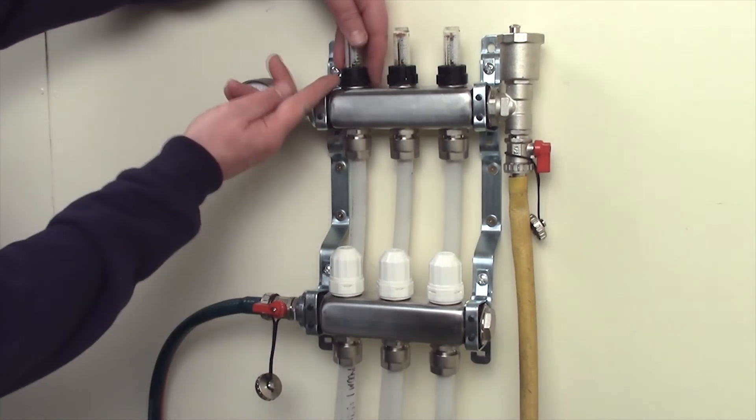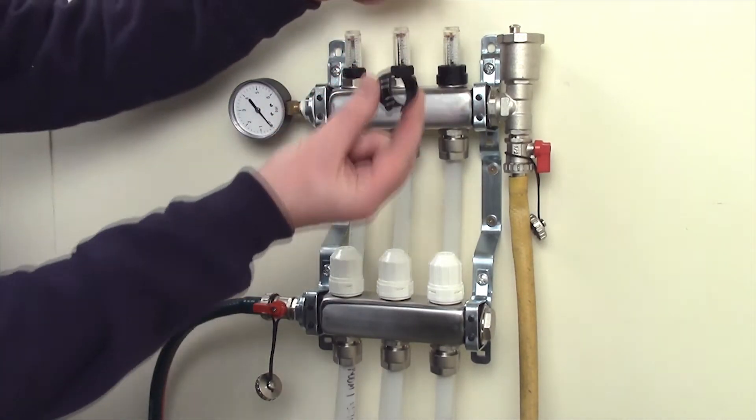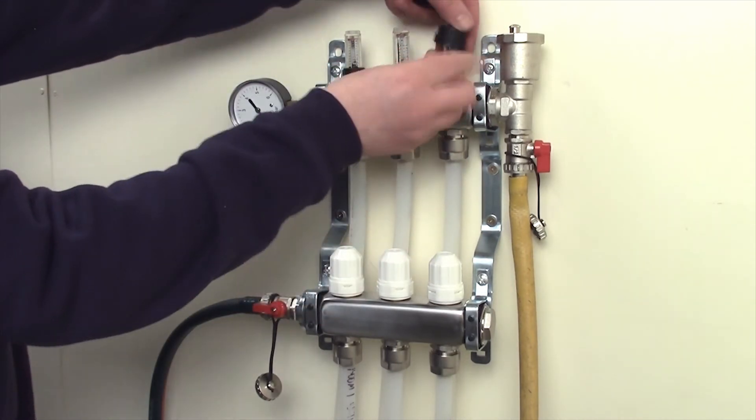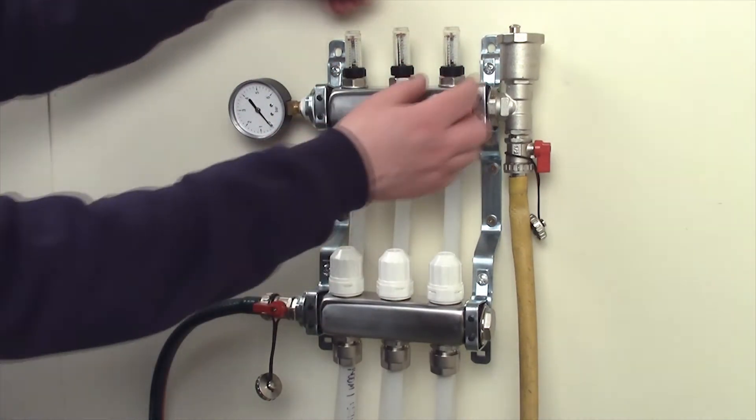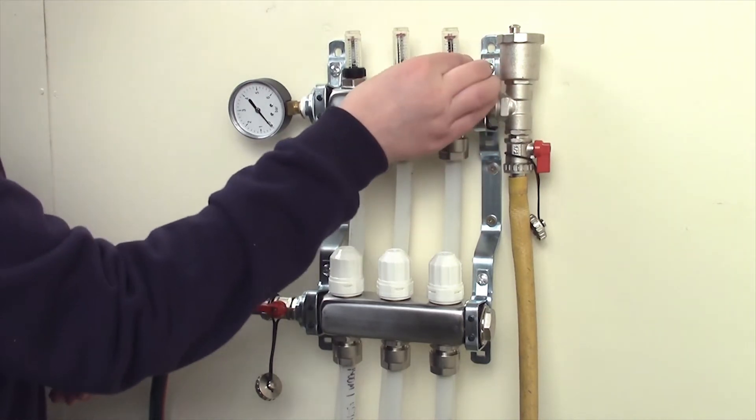Close flow gauges by removing the black plastic locking ring at the base of the sight glass, then turn the black plastic knurled nut at the base of the sight glass clockwise.